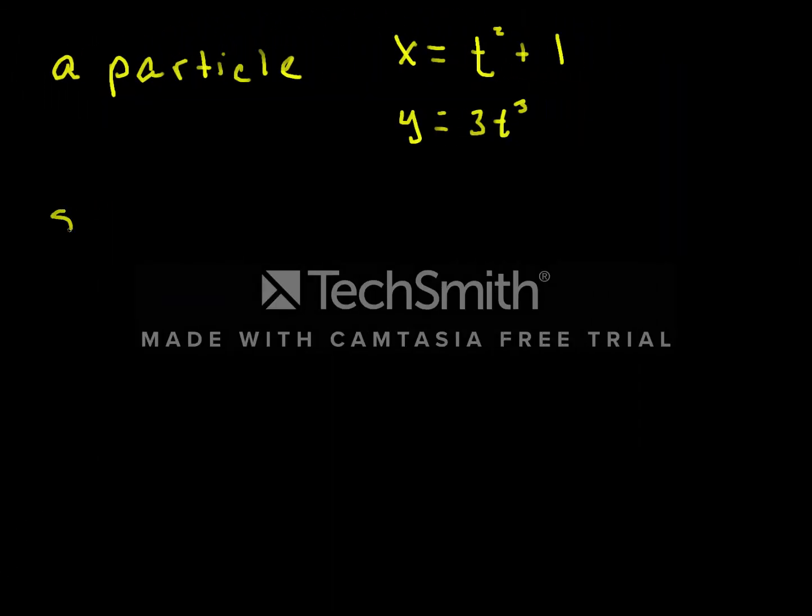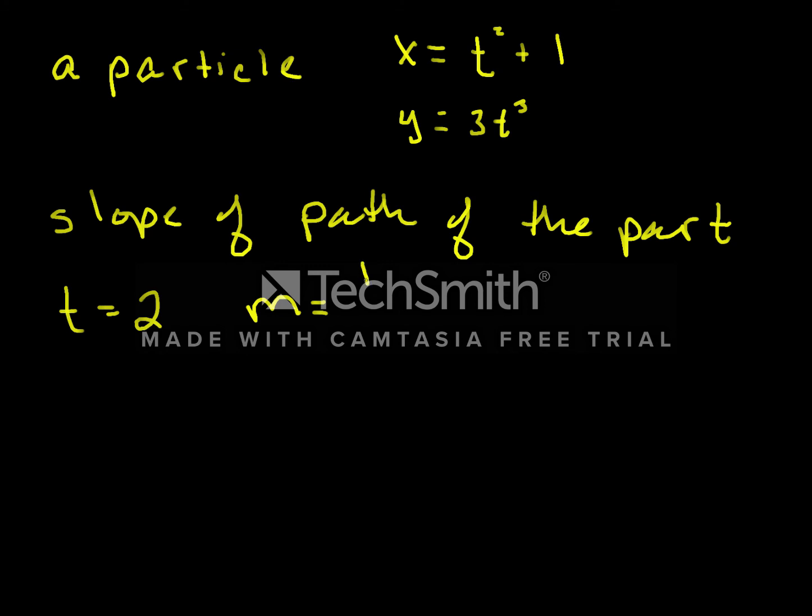So back to our blackboard. We want to calculate the slope of the path of the particle when time is equal to 2, or t = 2. And from the graph we just looked at, we know that the slope will be the change in y over the change in x. Nothing surprising there.